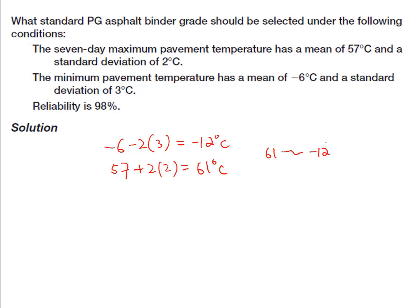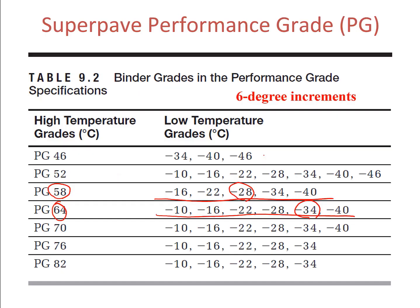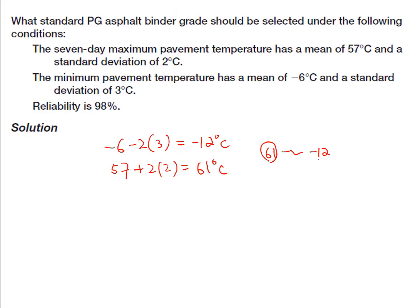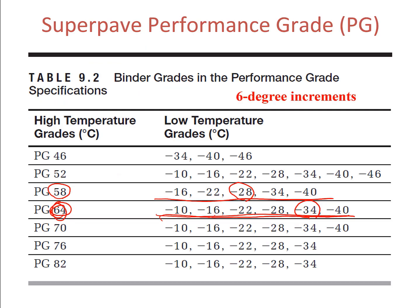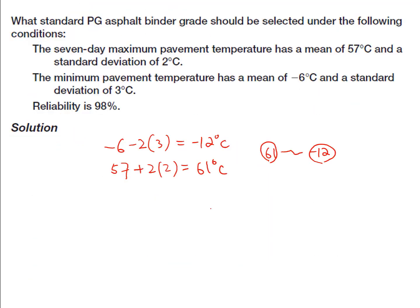When choosing the grade, the design maximum must be closest to 61 but higher than 61, so that is 64. The design minimum must be closest to negative 12 but lower than negative 12, so that is negative 16. Therefore, the binder for this problem should be PG 64 negative 16.